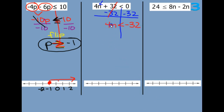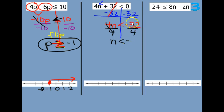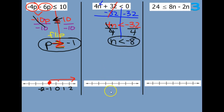The opposite of multiplying by 4 is dividing by 4 — so get rid of the 4. We have n is less than, and then we have negative 32 divided by 4. Well, 8 times 4 is 32, so there's our answer. We need to graph it on our number line — negative 8.